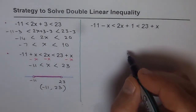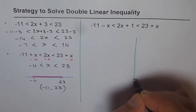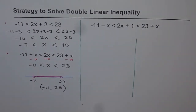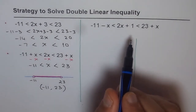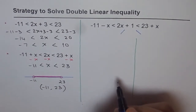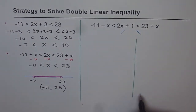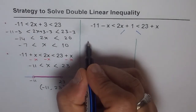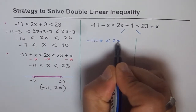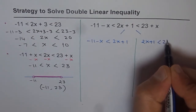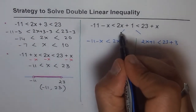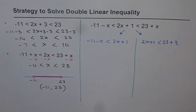In such cases we are left with no option but to solve this as two different inequalities. If you are not able to get rid of x from the sides, then this double inequality will be solved in two parts, and the solution which is common to both will be our final solution. So we rewrite this as: Part 1 — minus 11 minus x is less than 2x plus 1, and Part 2 — 2x plus 1 is less than 23 plus x. We decompose the double inequality into two separate inequalities and take the intersection of the solutions.